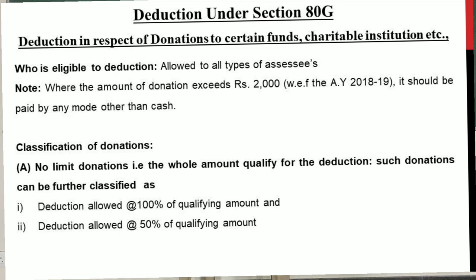Donations under Section 80G are classified into types. There are no-limit donations and with-limit donations. The deductions can be further classified as: deduction allowed at 100% of qualifying amount, and deduction allowed at 50% of qualifying amount.